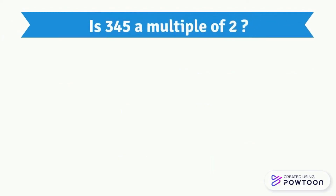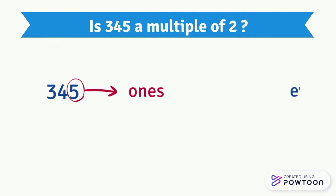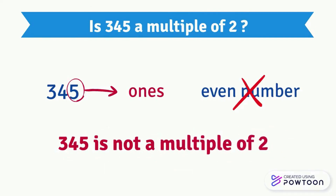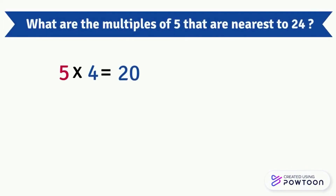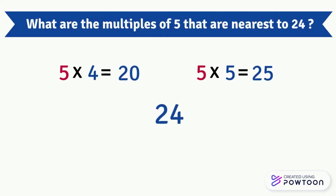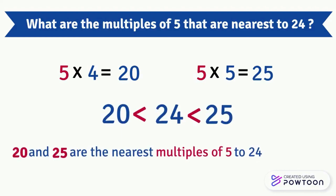Is 345 a multiple of 2? The number 345 has 5 in the ones place, so 345 is not an even number, and therefore 345 is not a multiple of 2. What are the multiples of 5 nearest to 24? We know that 5 times 4 equals 20 and 5 times 5 equals 25. The number 24 is between 20 and 25, so 20 and 25 are the nearest multiples of 5 to 24.